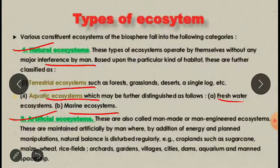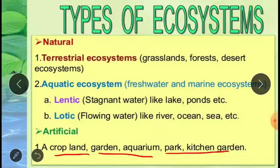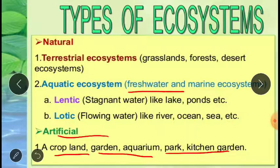Artificial ecosystems are man-made or man-engineered ecosystems, like croplands, gardens, aquariums, parks, and kitchen gardens. All these are made, created, or maintained by human beings, so they are known as artificial ecosystems. In the aquatic ecosystem, apart from fresh water and marine water, we can also divide it into lentic and lotic types of ecosystem.